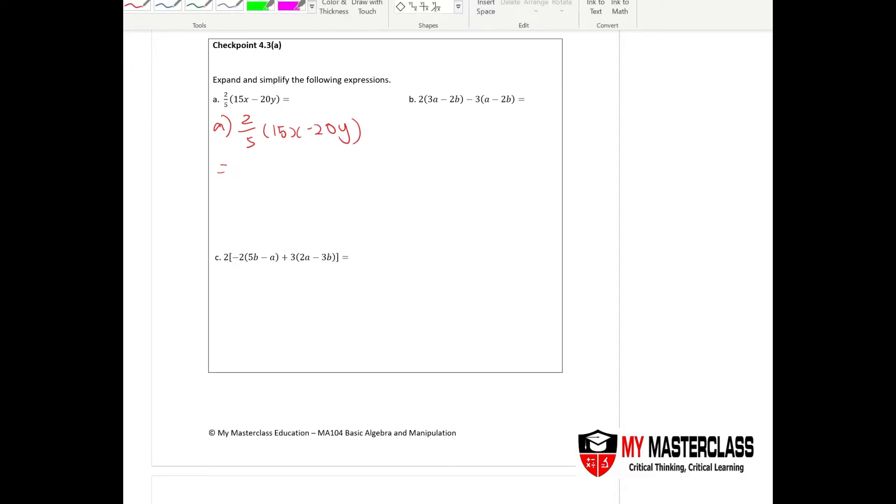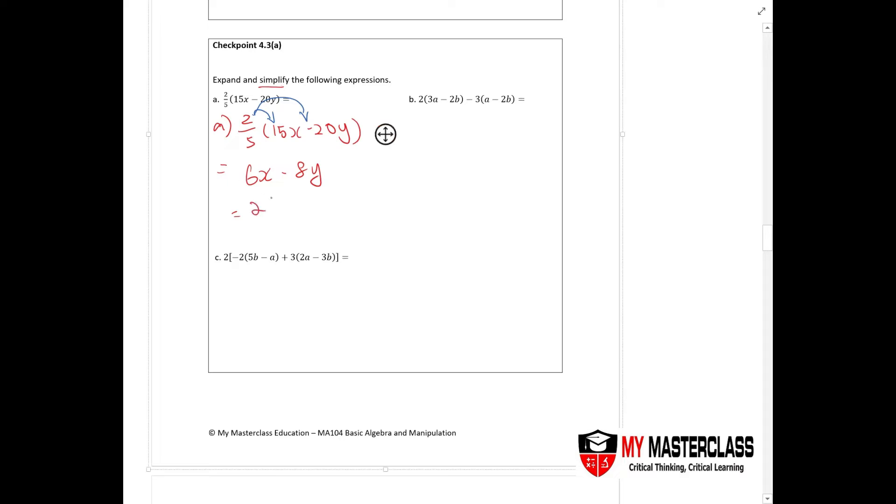So what do you have over here? You would have 6x minus 8y. So then you're asked to simplify, right? Please only simplify this if the question actually states so. So you take out the common factor over here, which is 2, to give you 2(3x - 4y).